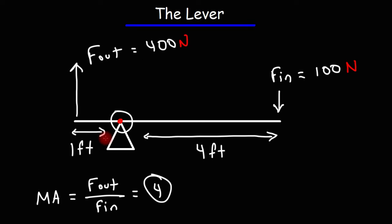The torque around the axis of rotation is the same. Torque is equal to the force times the lever arm. On this side, the torque is going to be a force of 100 times 4 feet, which is 400 newton-feet.